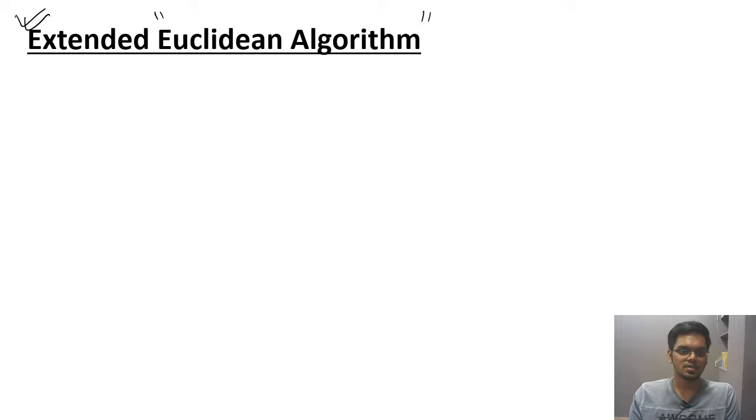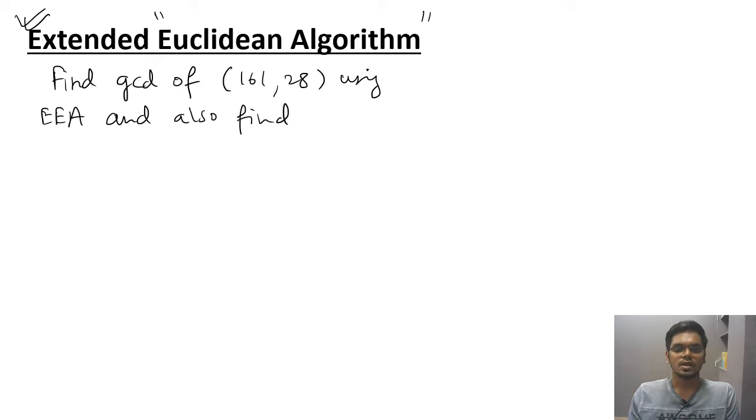Let us understand this by an example. The example is find GCD of 161 comma 28 using Extended Euclidean Algorithm and also find S and T. So this is the question and this is the exam question. So take special care. Let us start the video.